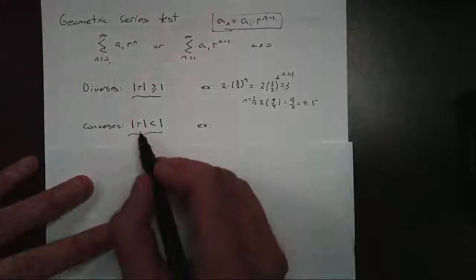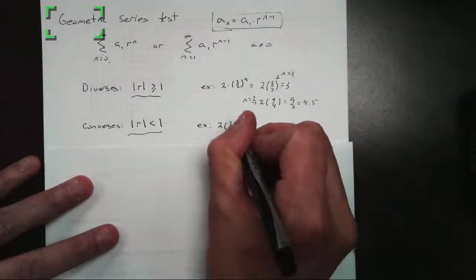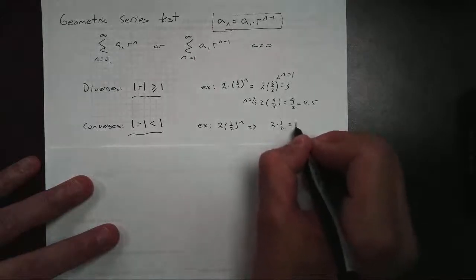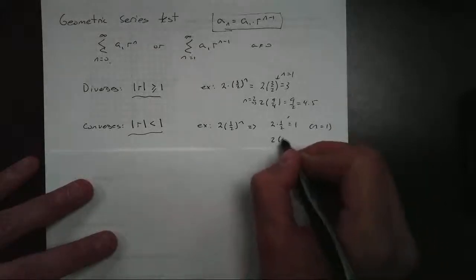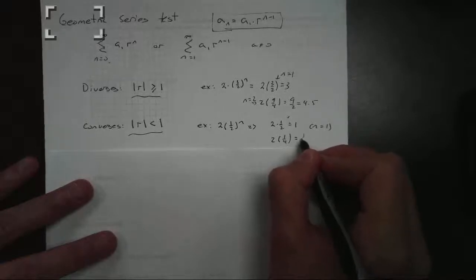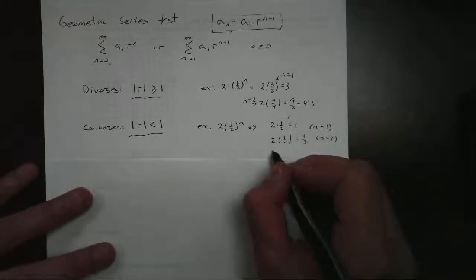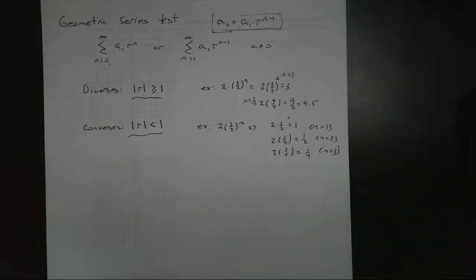For convergence, we say the absolute value of r, the common ratio, has to be less than 1. For example, take 2 times (1/2)^n. When n = 1, I get 2 times 1/2, which is 1. When n = 2, I get 2 times 1/4, which is 1/2. When n = 3, I get 2 times 1/8, which is 1/4. It's getting smaller and smaller, so this will converge because the sequence is going to 0.